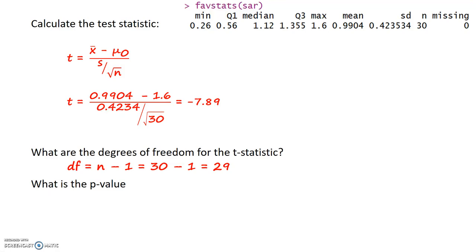Finally, what I need is the p-value. Using our code, I can use the function pt. Remember, this function always gives us the lower tail unless I tell it otherwise. The first value I need to enter is the T statistic, negative 7.89. The next value is the degrees of freedom, 29. And then I'm going to specify that we do in fact want the lower tail.